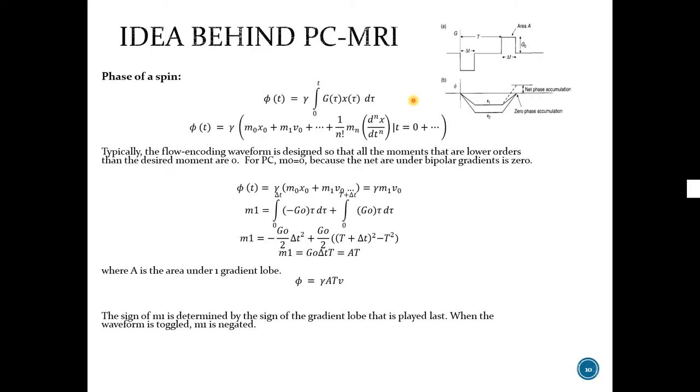I want to discuss the mathematical background of the phase velocity relation. Considering the sequence, we can formulate the phase. We can open this expression with Taylor expansion as a sum of moments, where X is position and V is velocity, and it continues with the higher derivatives of the position. In PC, we are interested in velocity, so we can ignore higher derivatives. And then we obtain the relation gamma M1 with V0. And M1 can be expressed by this, considering this sequence. And from this integral, we can obtain G0 delta T squared. This is the area, so we can make this equal to AT.